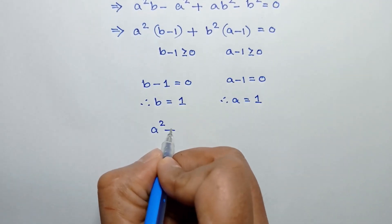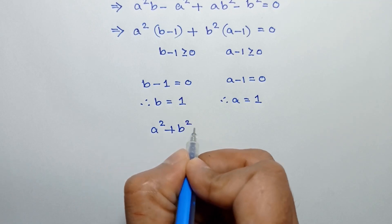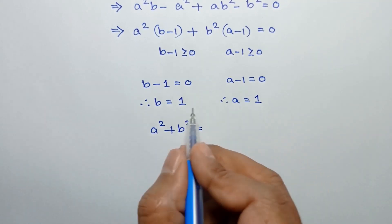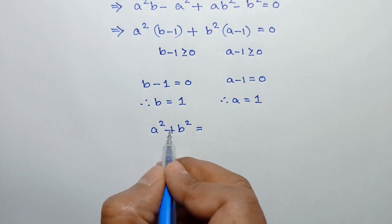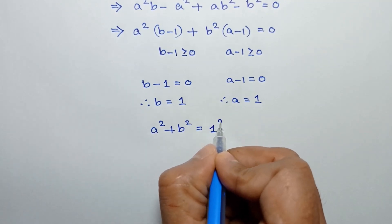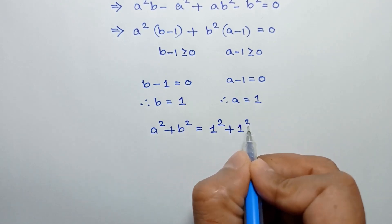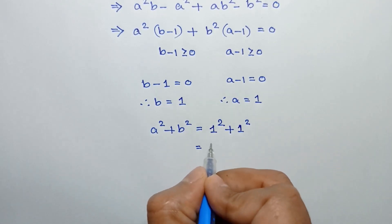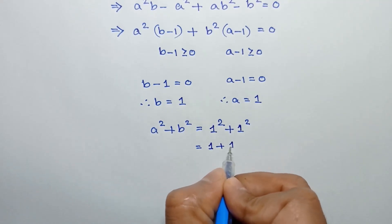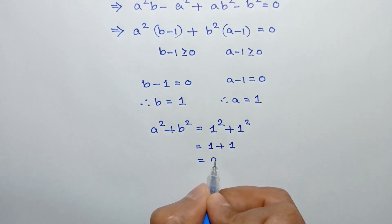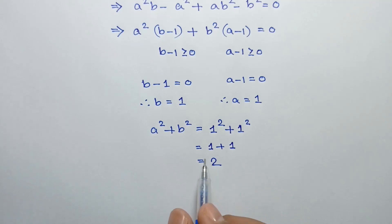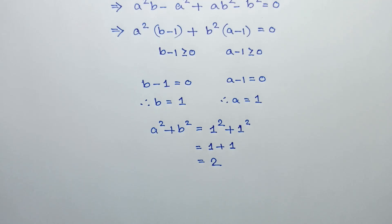Now a squared plus b squared equals 1 squared plus 1 squared, which is 1 plus 1, equal to 2. So the value of a squared plus b squared is 2. If you like this video please subscribe to my channel. Thanks for watching.